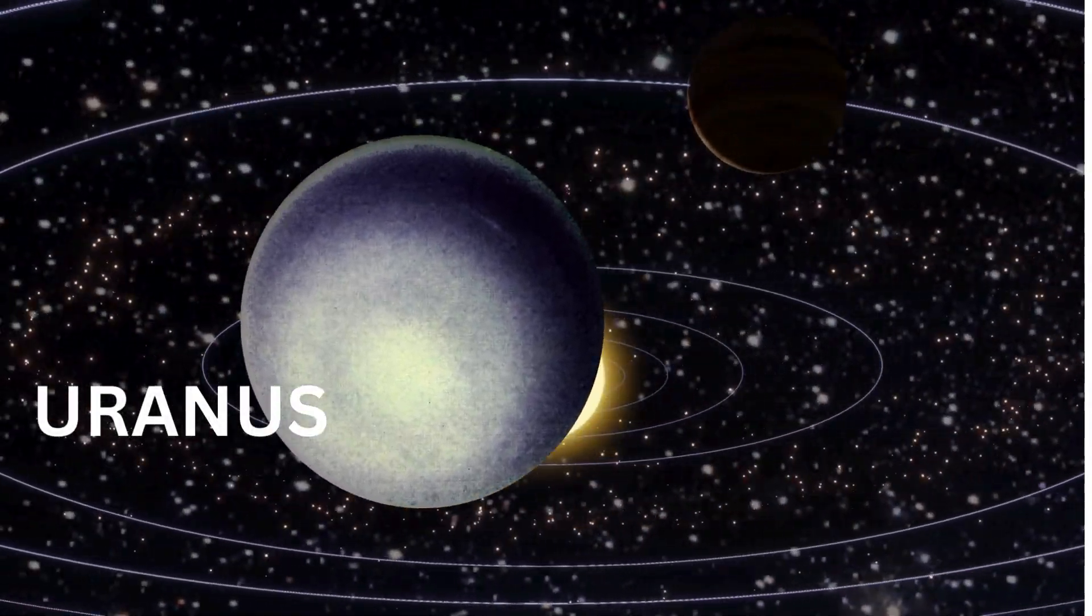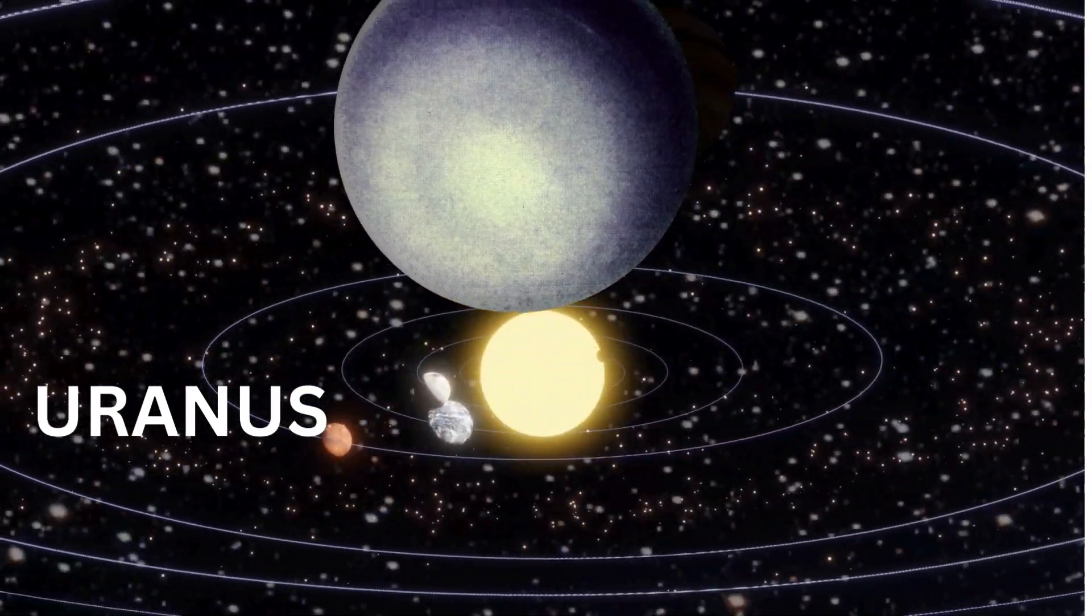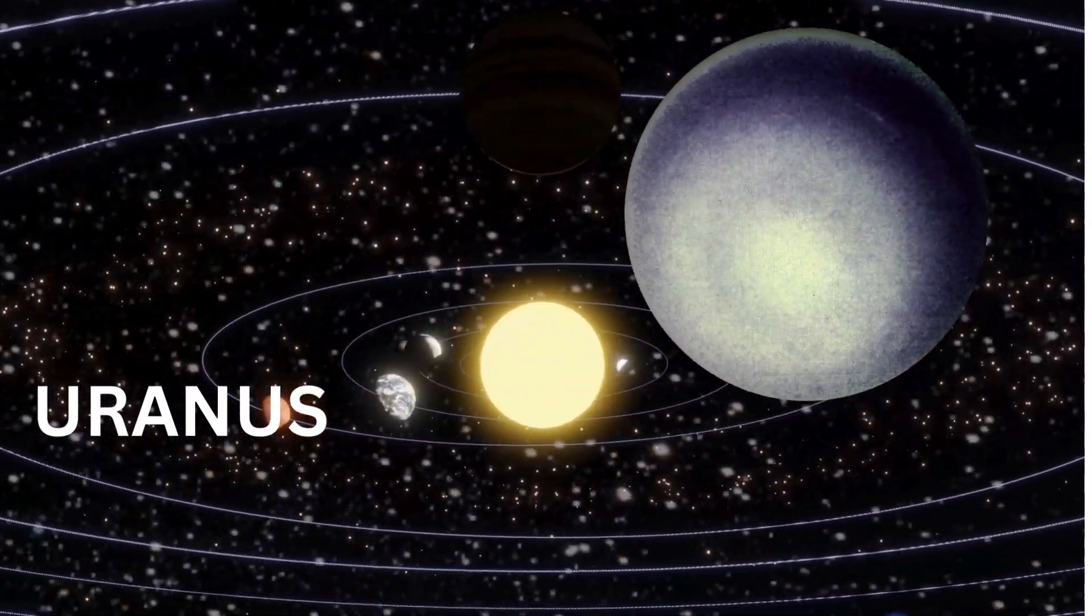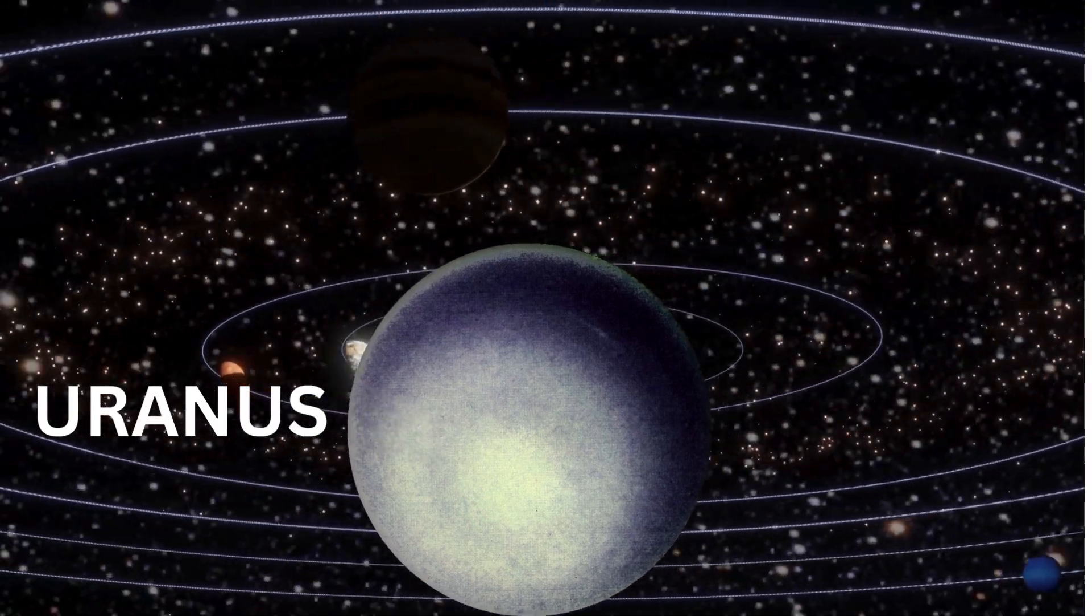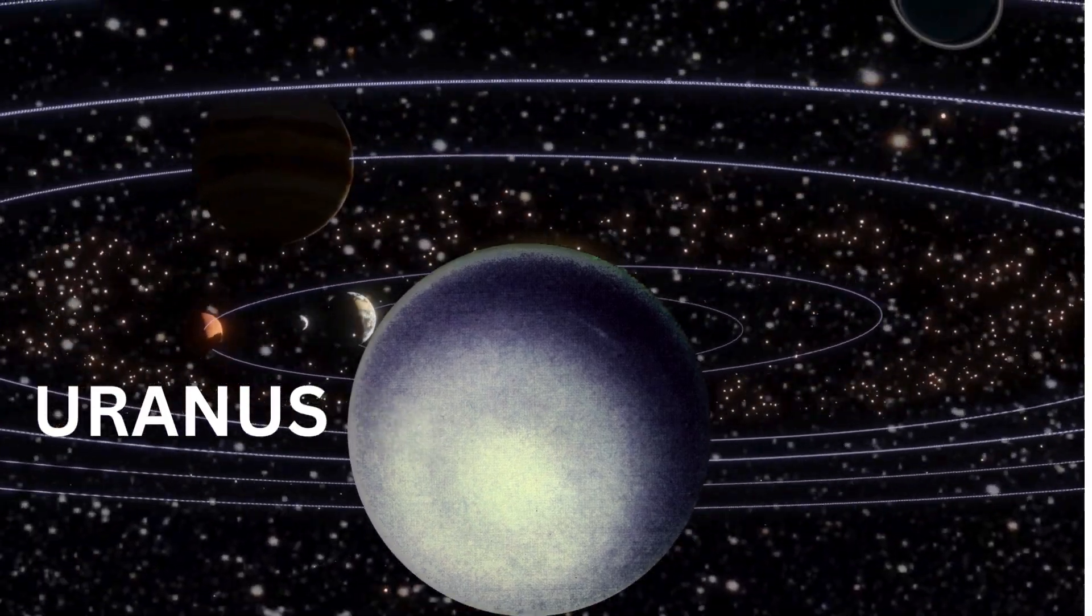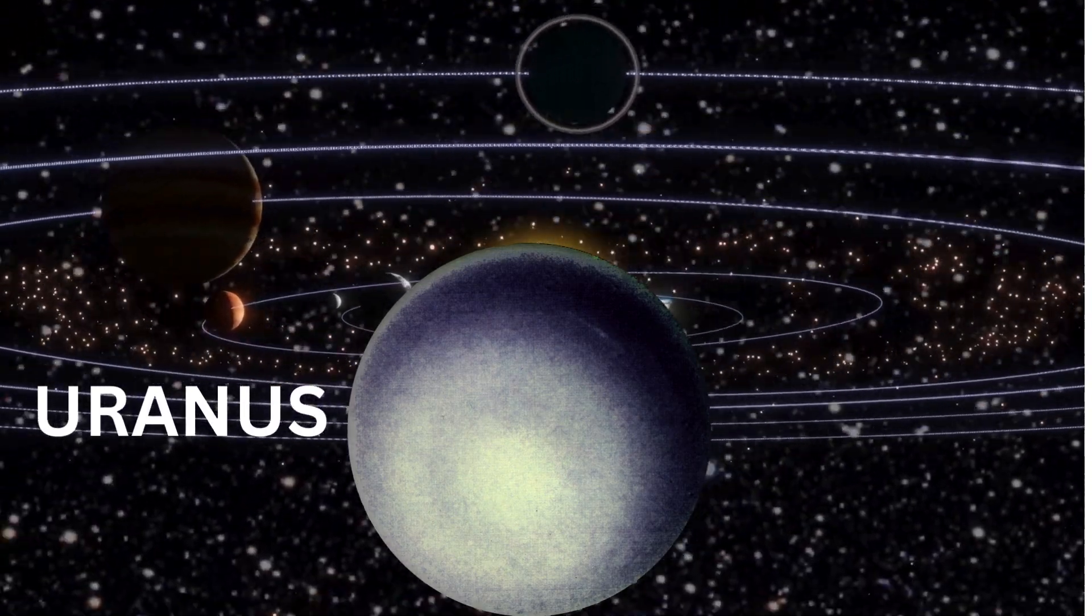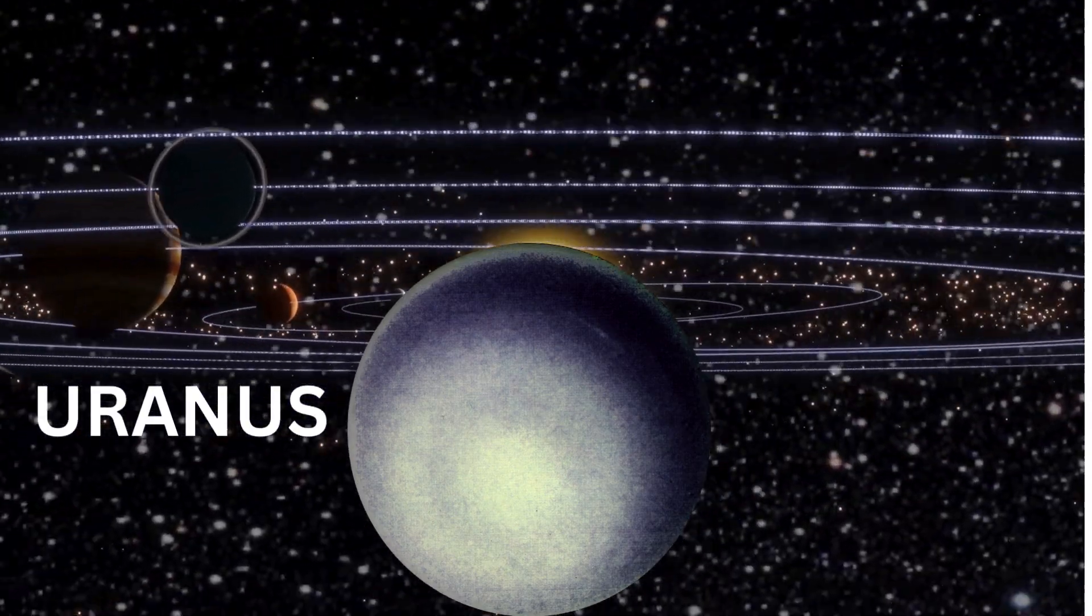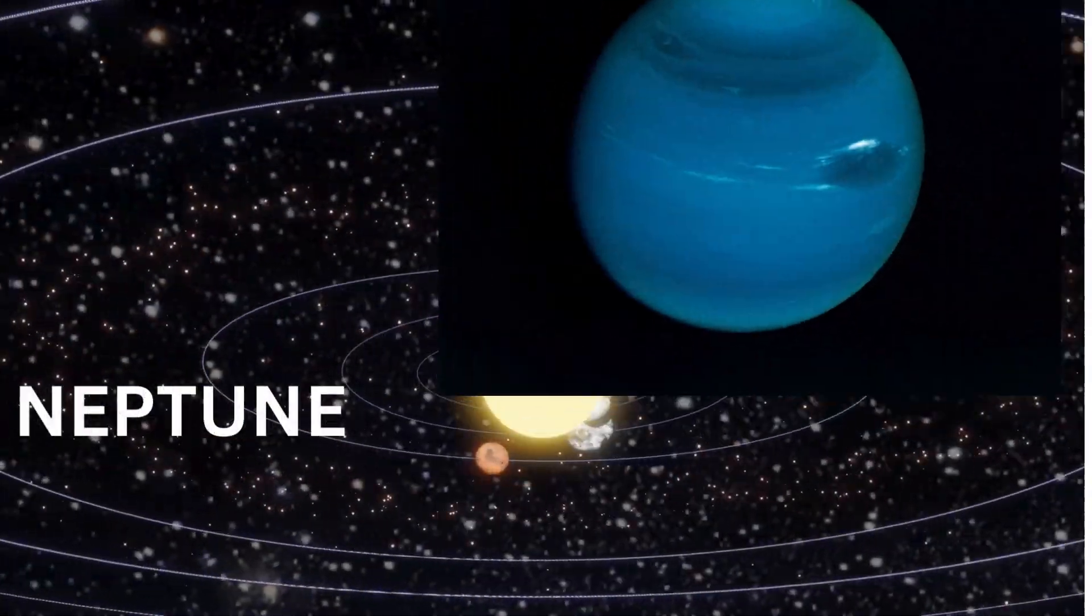Uranus, the ice giant, spins on its side with pride, a world of mystery, where secrets tend to hide. Its icy atmosphere creates a frigid, otherworldly scene, a celestial oddity, a mesmerizing dream.